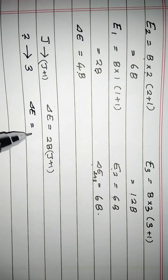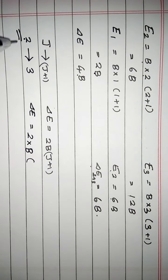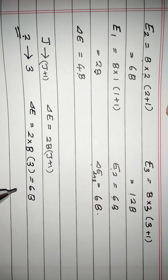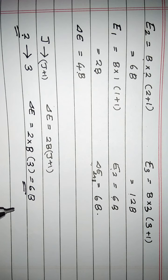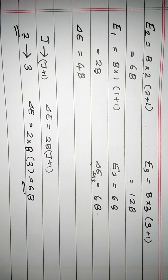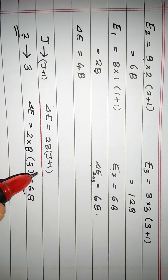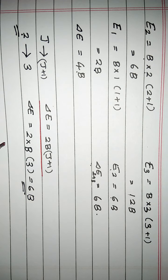Delta E equals 2B into (J+1), where J is the lower level. For example, J equals 2 into 3 gives 6B. So using the equation Delta E equals 2B(J+1), with J as the lower level quantum number, we can calculate the energy difference for any rotational transition.